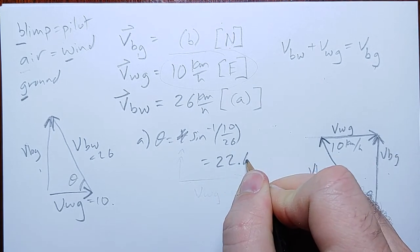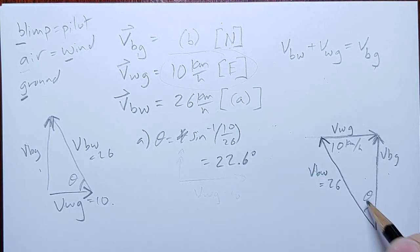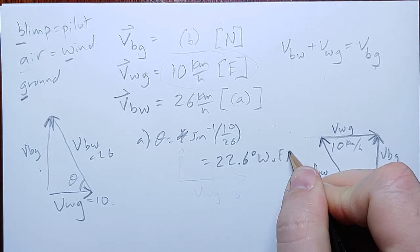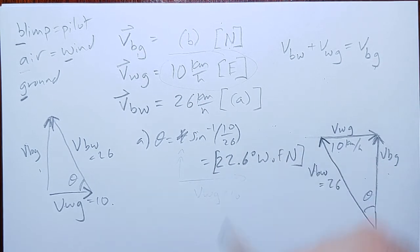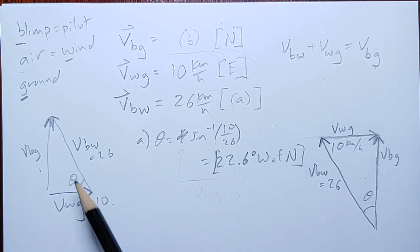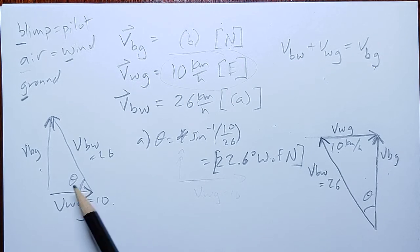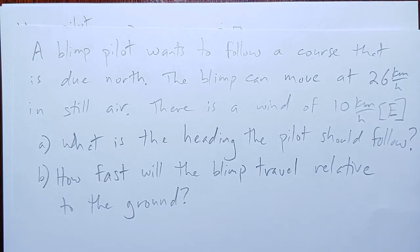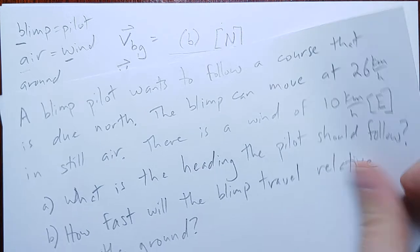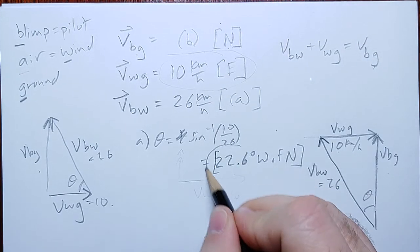22.6 degrees west of north, or alternatively, would this be 60, no, 57.4 degrees north of west is equally good. And part a only asked for the heading. It didn't ask for a full vector, didn't ask for the full velocity, just the heading, which is just the direction, and so that's all we need.